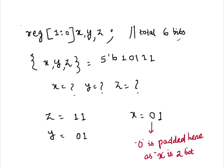Here total is 6 bits: x 2 bits, y 2 bits, z 2 bits. And x, y, z equal to, if it is written x, y, z equal to 5-bit data: 1, 1, 0, 1, and 1. Then what is x, what is y, and what is z?